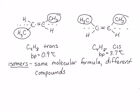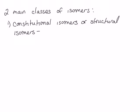There are several types of isomers, but for now we're going to focus on two classes. The first is called constitutional isomers. Constitutional isomers, or structural isomers, differ only in how the atoms are connected together.